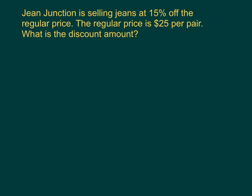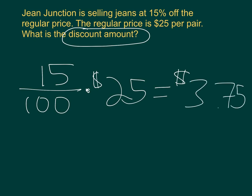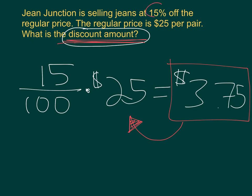Gene Junction is selling jeans at 15% off, so you know it's a discount. The regular price is $25 per pair. What is the discount amount? It's not asking for the final price, just the discount amount. That's 15% of 25. If you want to find the percent of a number, you multiply the percent times that number. 15% of 25 is $3.75. That is the discount amount. If it were asking for the final price, we would subtract it from the original price. But in this case, it's just asking for the discount amount.